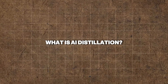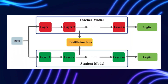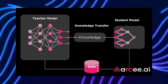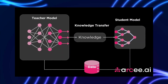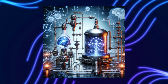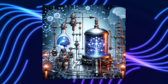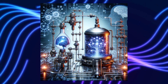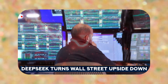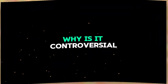What is AI distillation? At its core, distillation is like training a student using a top professor's notes instead of making them learn from scratch. AI distillation involves taking the outputs of a more advanced model and using them to train a simpler, more efficient model. It's a method designed to accelerate learning and make AI models more accessible.